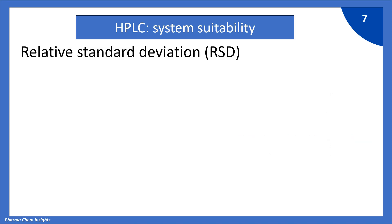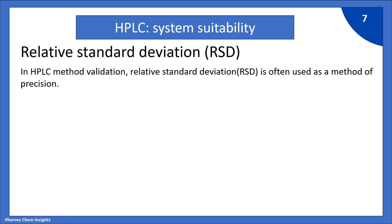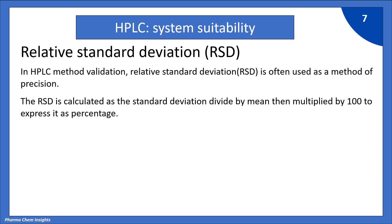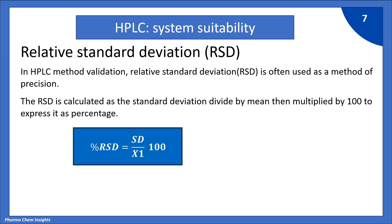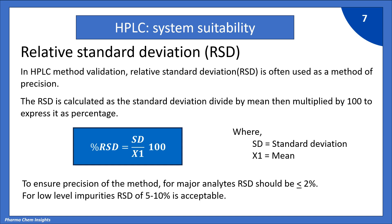Next parameter: relative standard deviation (RSD). In HPLC method validation, RSD is often used as a measure of precision. The RSD is calculated as the standard deviation divided by the mean, then multiplied by 100 to express it as a percentage: %RSD = (SD / X̄) × 100, where SD is standard deviation and X̄ is the mean. To ensure precision for major analytes, RSD should be less than or equal to 2%. For low-level impurities, RSD of 5 to 10% is acceptable.